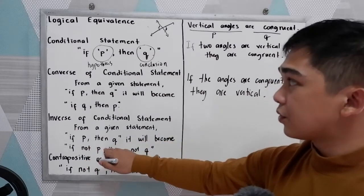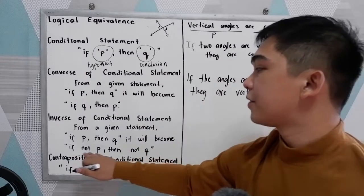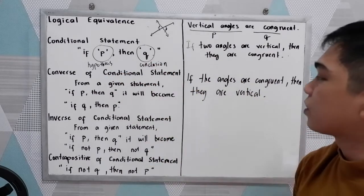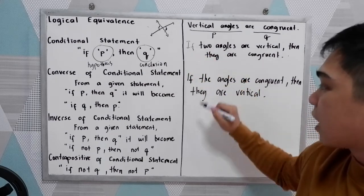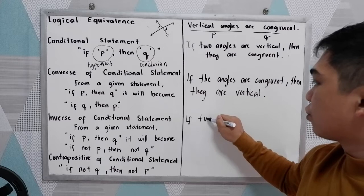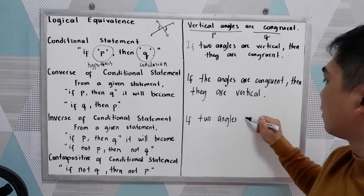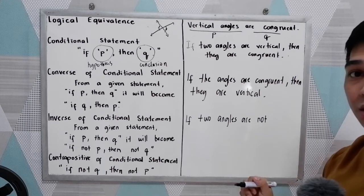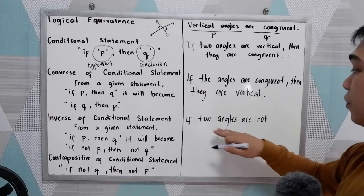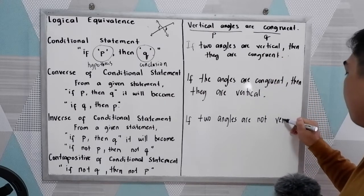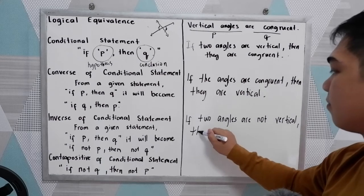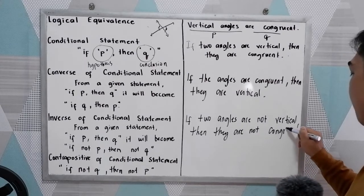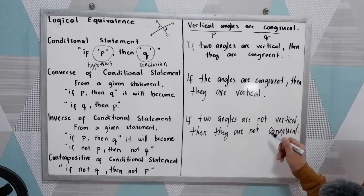Next, the inverse of the conditional statement. From 'if p then q,' the inverse becomes 'if not p then not q' — we simply negate the hypothesis and the conclusion. In negation we use the word 'no' or 'not.' So the inverse is: 'If two angles are not vertical, then they are not congruent.'